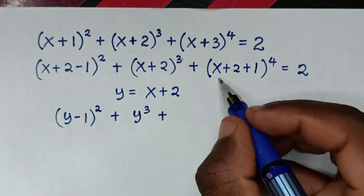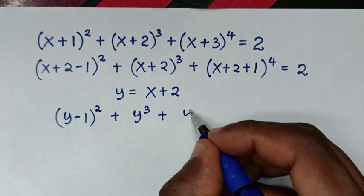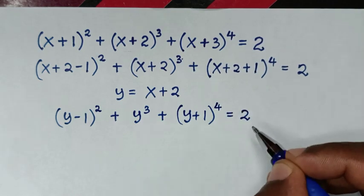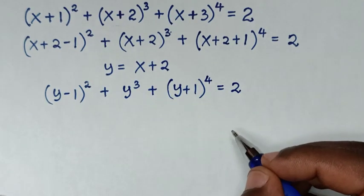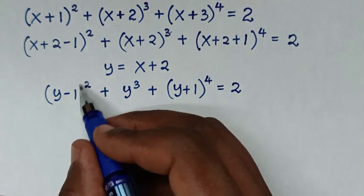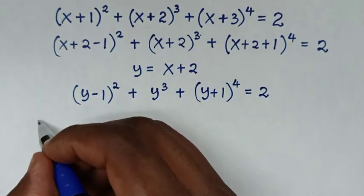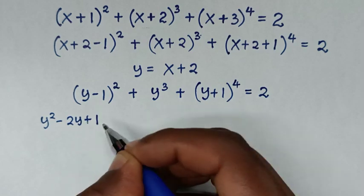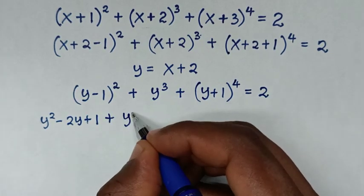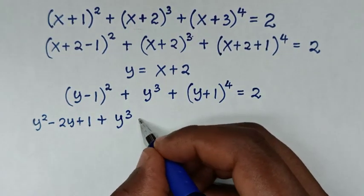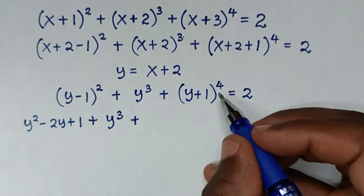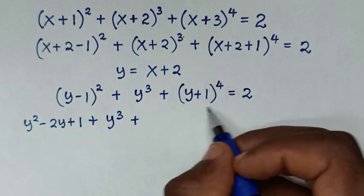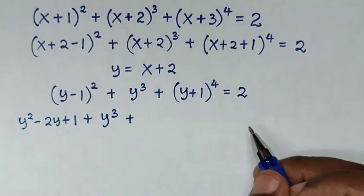plus (y+1)⁴ = 2. We expand the square of (y-1): it is y² - 2y + 1. Then plus y³, then plus the 4th power of (y+1). For this we apply Pascal's triangle formula.